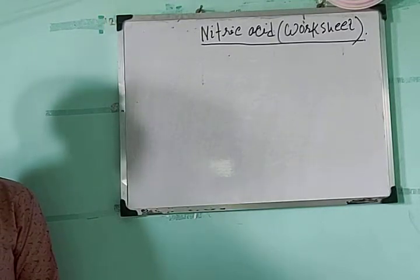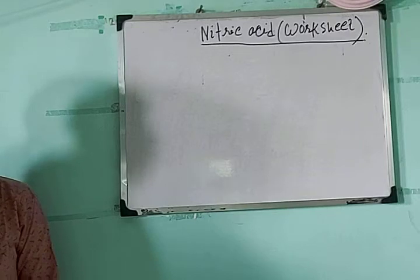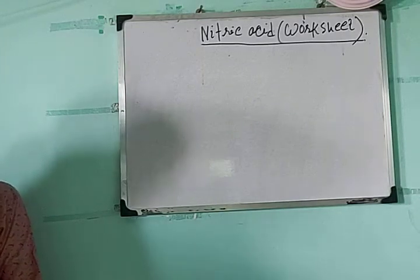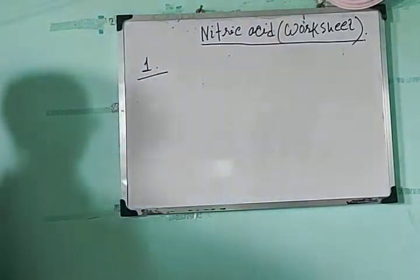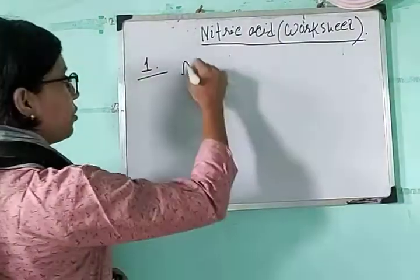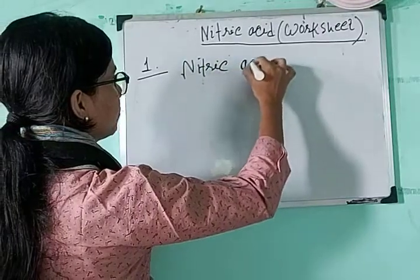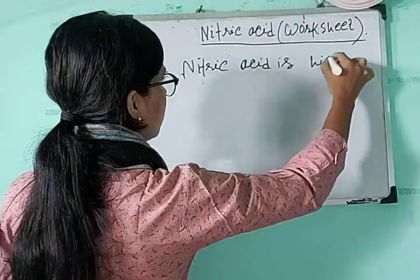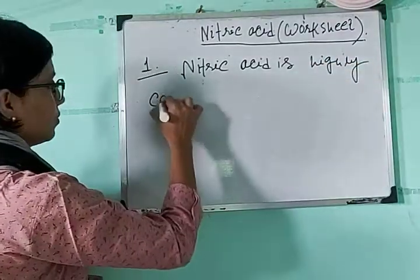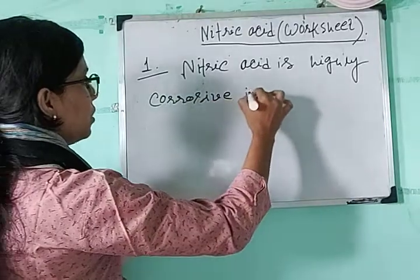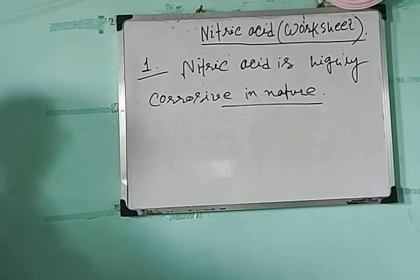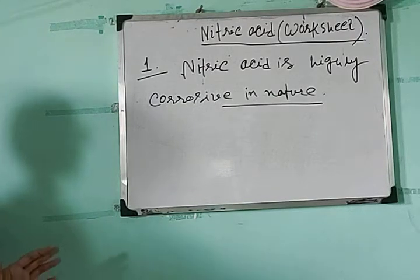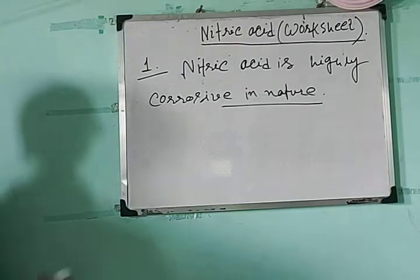Question number one: the apparatus used in the preparation of nitric acid should not have any rubber or port apparatus. Explain. You know that nitric acid is very corrosive in nature — highly corrosive — and due to this nature, no rubber or port apparatus can be used in the preparation of nitric acid, because nitric acid will damage that rubber or port apparatus.